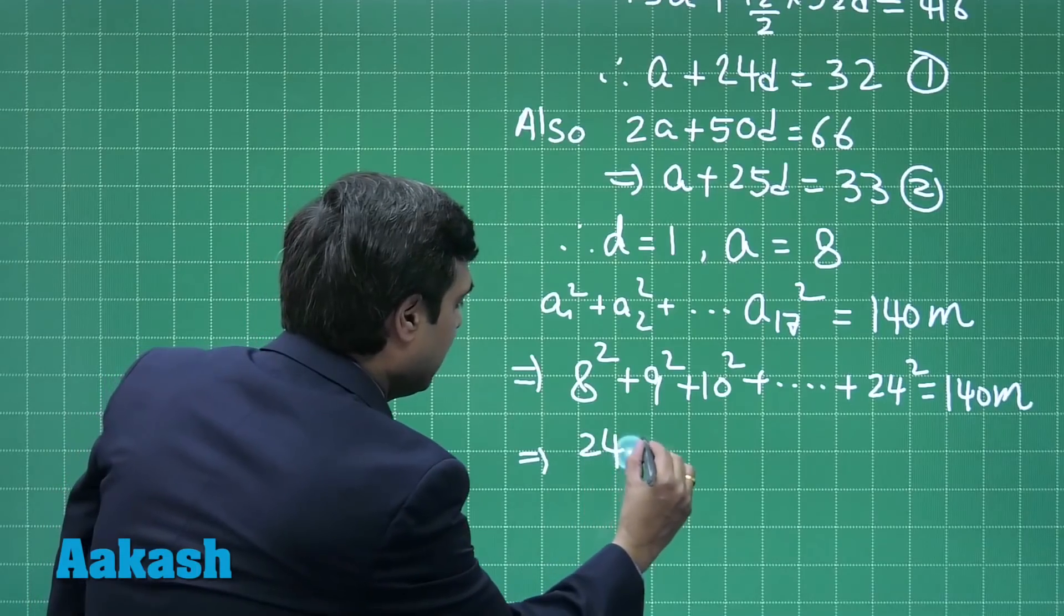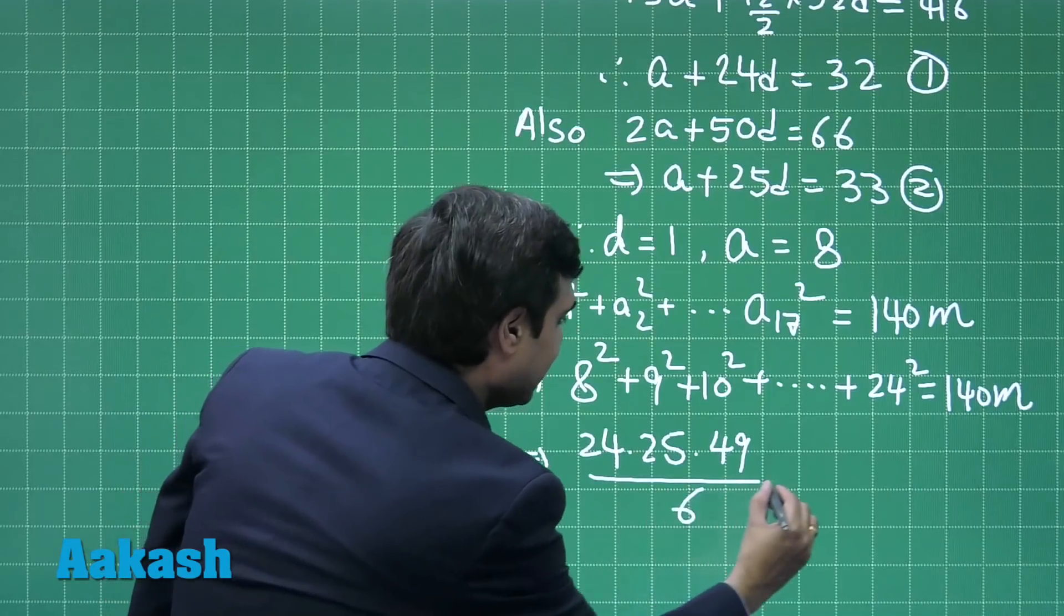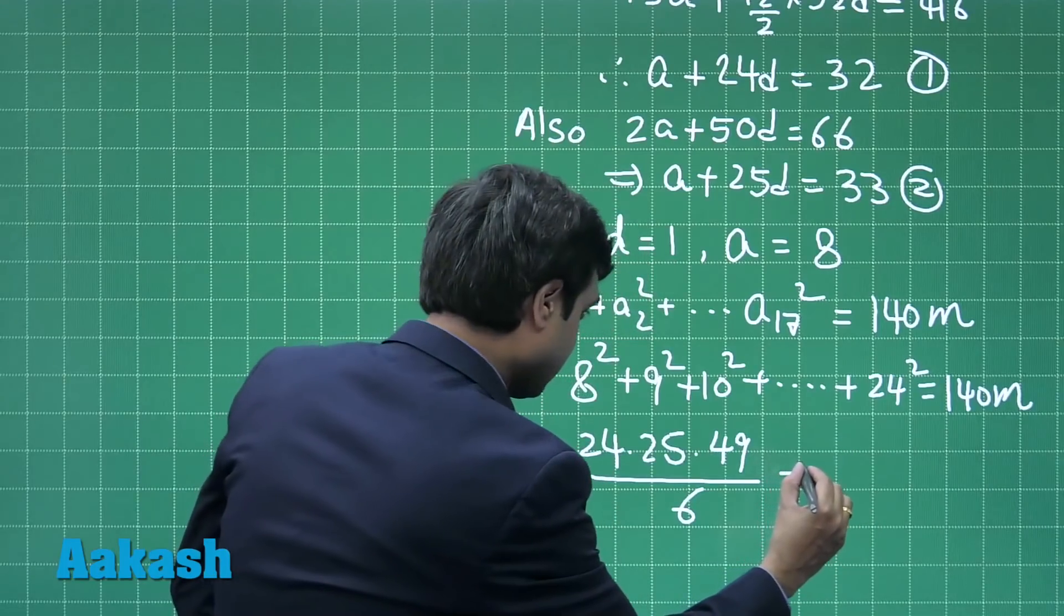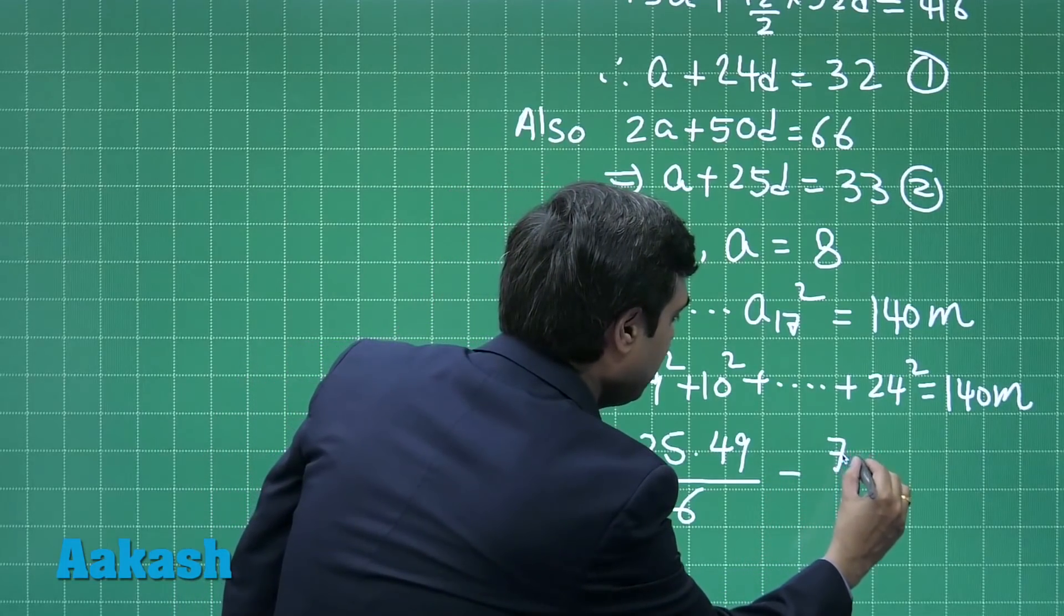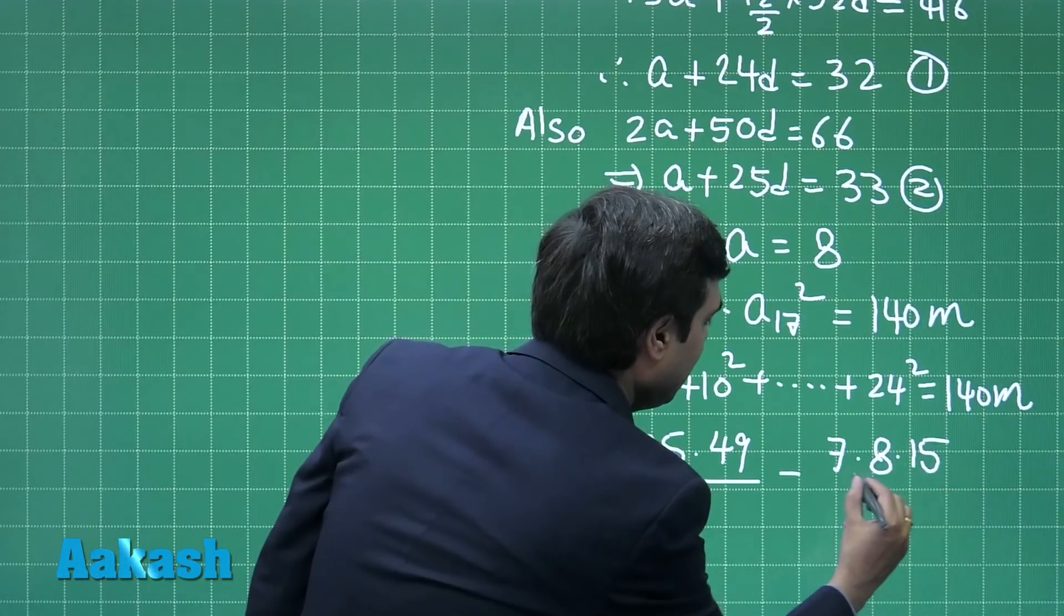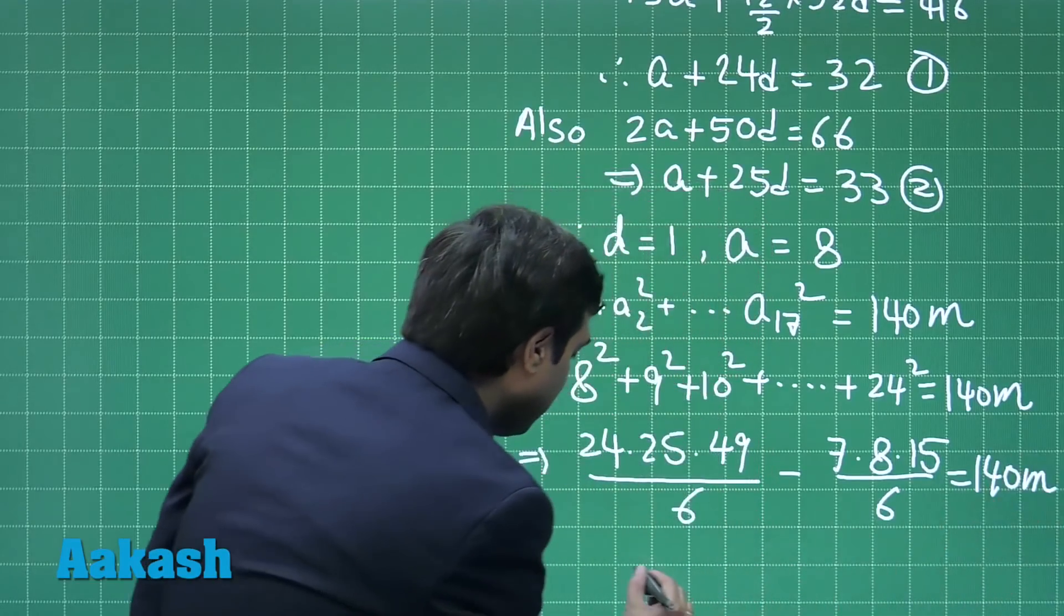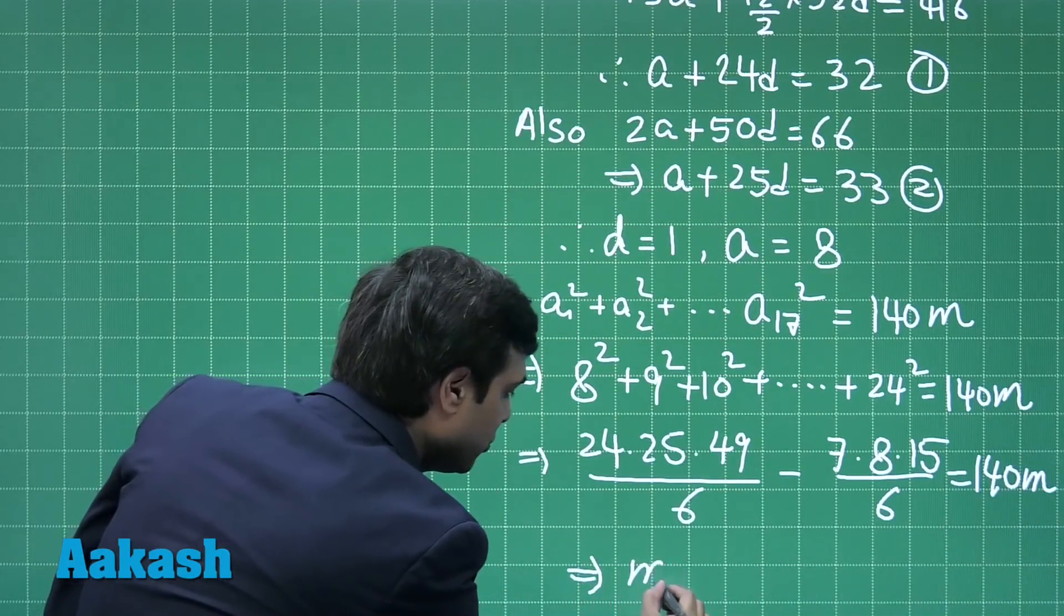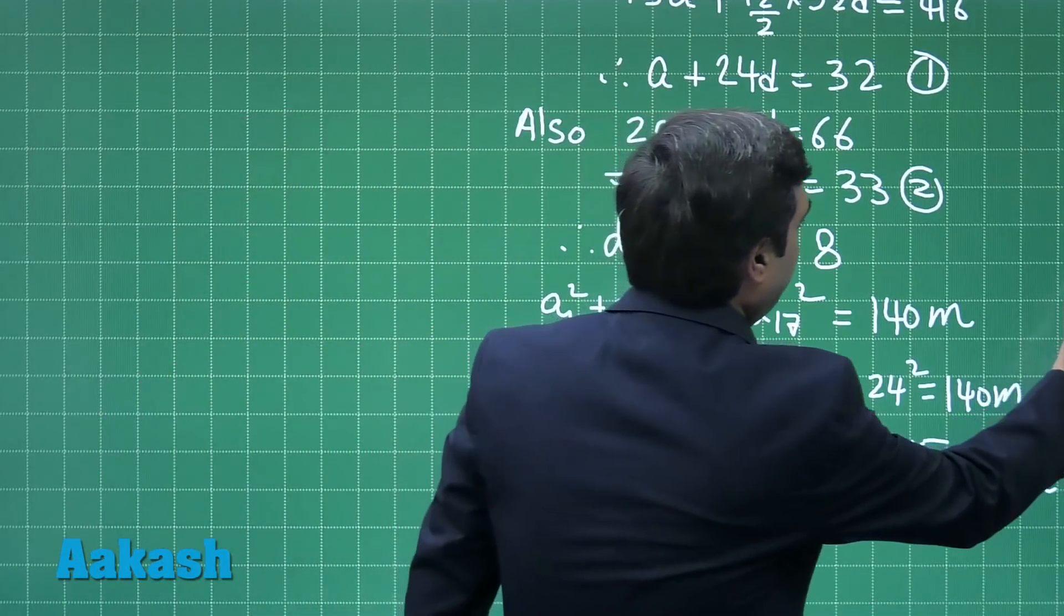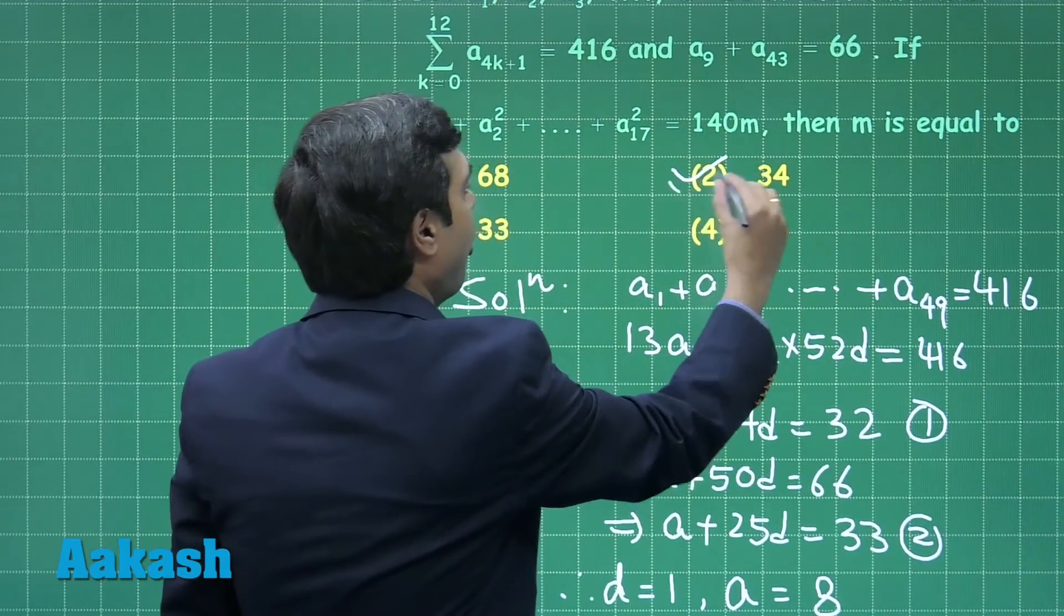24 × 25 × 49 divided by 6 minus 7 × 8 × 15 divided by 6 = 140m. Simple calculation, apply it to get the value of m as 34. So m = 34. So from the given options we can see that the correct answer is option number 2.